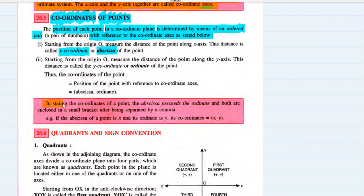When stating the coordinates of a point, the abscissa (x-coordinate) precedes the ordinate (y-coordinate), and both are enclosed in small brackets after being separated by a comma — written as (x, y).